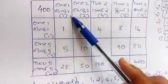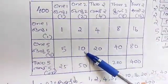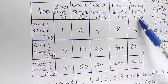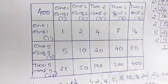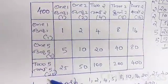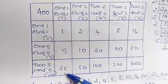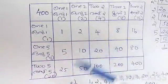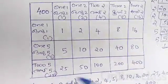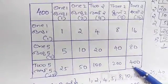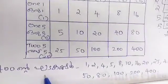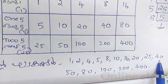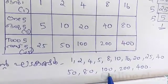1 x 5 = 5. 2 x 5 = 10. 4 x 5 = 20. 8 x 5 = 40. 16 x 5 = 80. 1 x 25 = 25. 2 x 25 = 50. 4 x 25 = 100. 8 x 25 = 200. 16 x 25 = 400. So the factors are: 1, 2, 4, 5, 8, 10, 16, 20, 25, 40, 50, 80, 100, 200, 400.